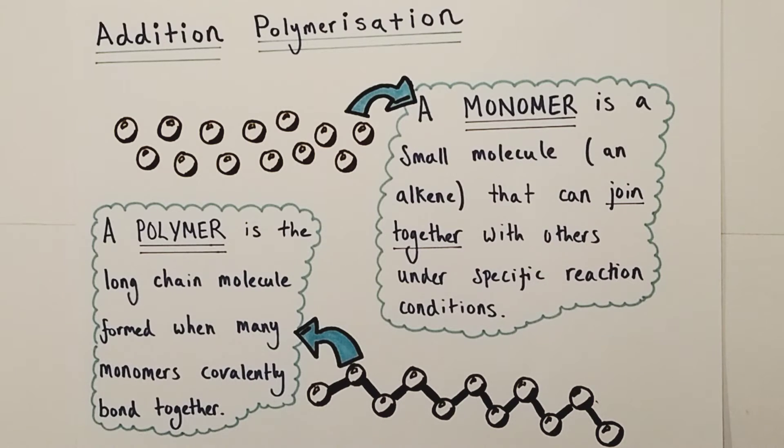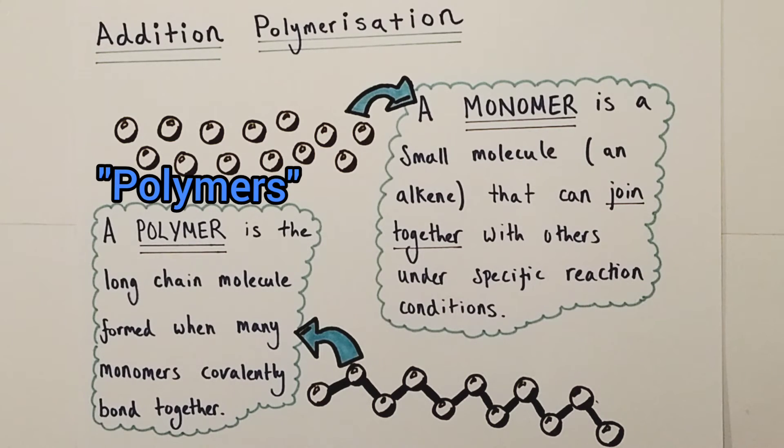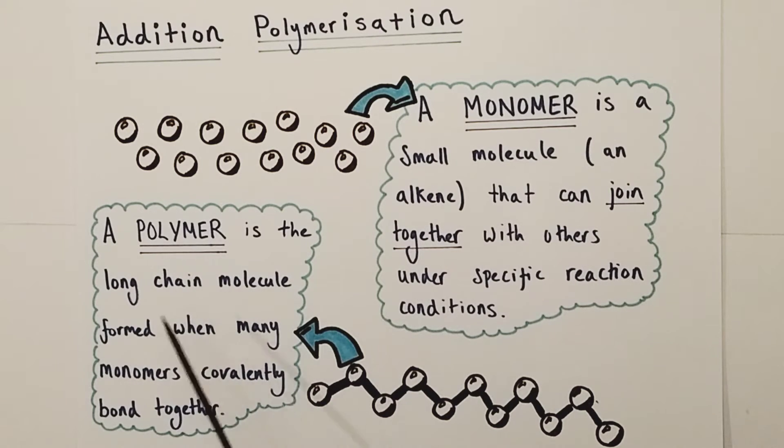The first thing I want to talk about is monomers. Monomers are small molecules like alkenes that can join together under very specific reaction conditions through a free radical addition mechanism, forming long chain molecules. These are known as polymers, coming from the Greek poly meaning many and mer meaning pieces. Polymers are long chain macromolecular structures formed when many monomers covalently bond together.